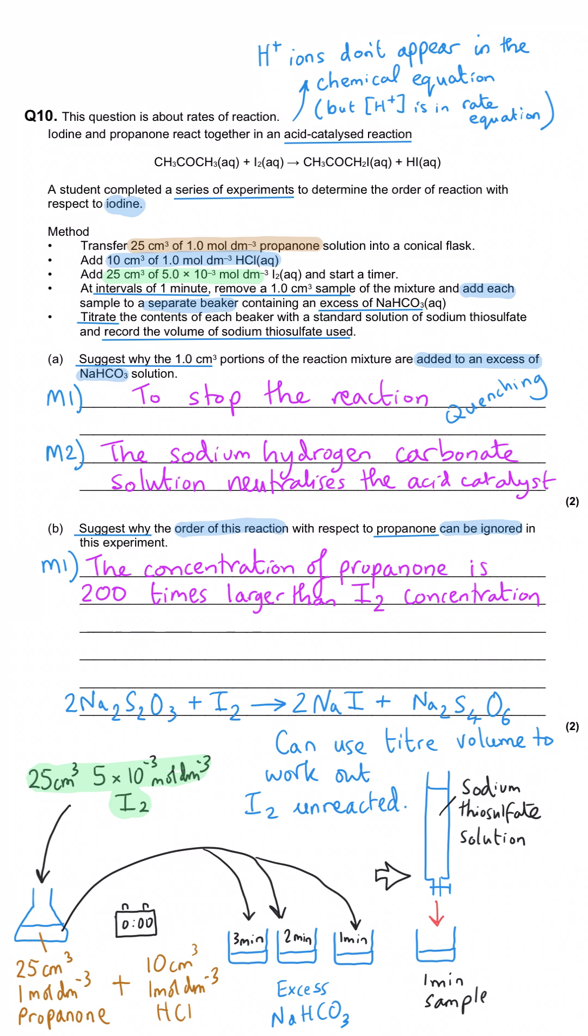The propanone concentration is actually 200 times larger than the iodine concentration. So we can ignore propanone's order because the concentration of propanone is much larger. From that point of view, the concentration of propanone can be considered almost constant. It will change of course, but that change will be negligible compared to the concentration present and certainly negligible compared to the change in iodine concentration.